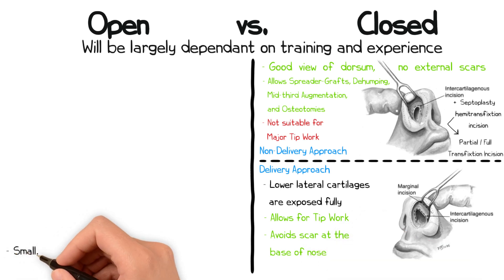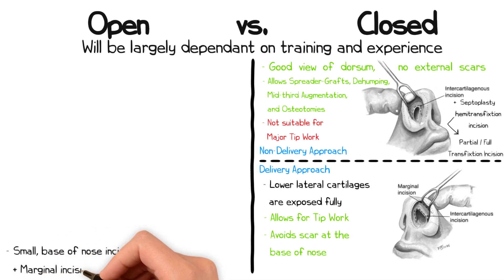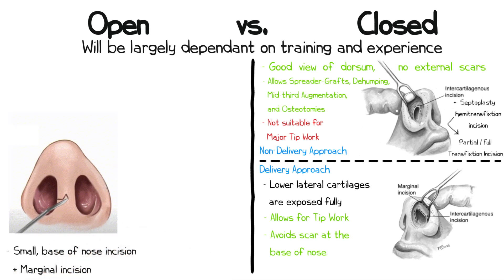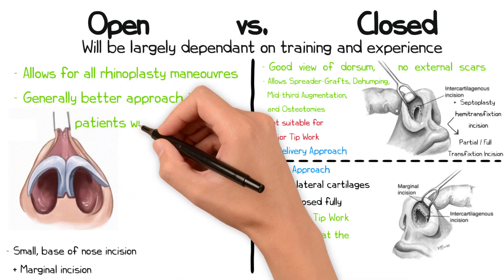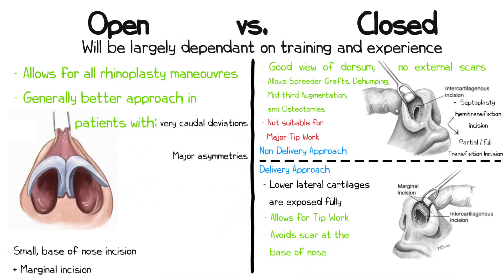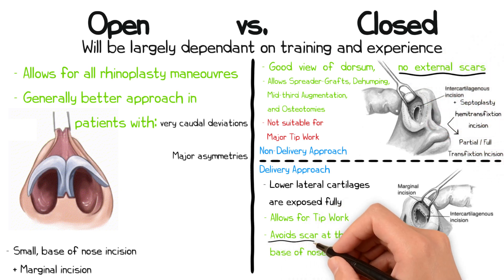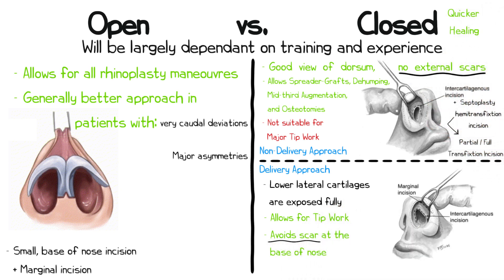In an open approach, there is a small staggered incision at the base of the nose, which is combined with internal marginal incisions to expose the whole nasal framework. All rhinoplasty maneuvers can be carried out this way, and for patients with very caudal deviations and major asymmetry, it permits far superior views. In terms of the closed approach, there is no scar and in general quicker healing, particularly if no tip work has been carried out.